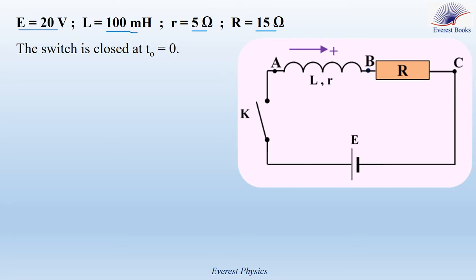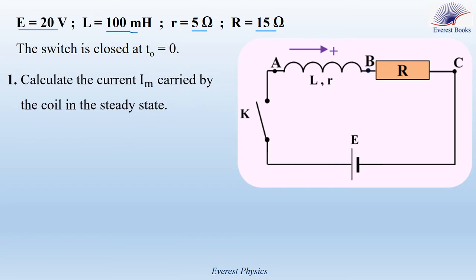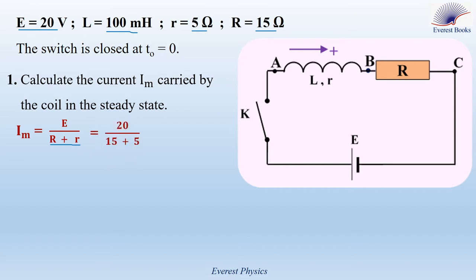The switch is closed at T0 equals zero. Question number one: calculate the current IM carried by the coil in the steady state. When we close the switch, the current increases from zero to its maximum value IM. When the current becomes maximum, the steady state is attained. The expression of the current in the steady state is given by E over capital R plus small r, which is the equivalent resistance of the circuit. E is equal to 20 volts, capital R is 15 ohms, small r is 5 ohms, and the current in the steady state is 1 ampere.